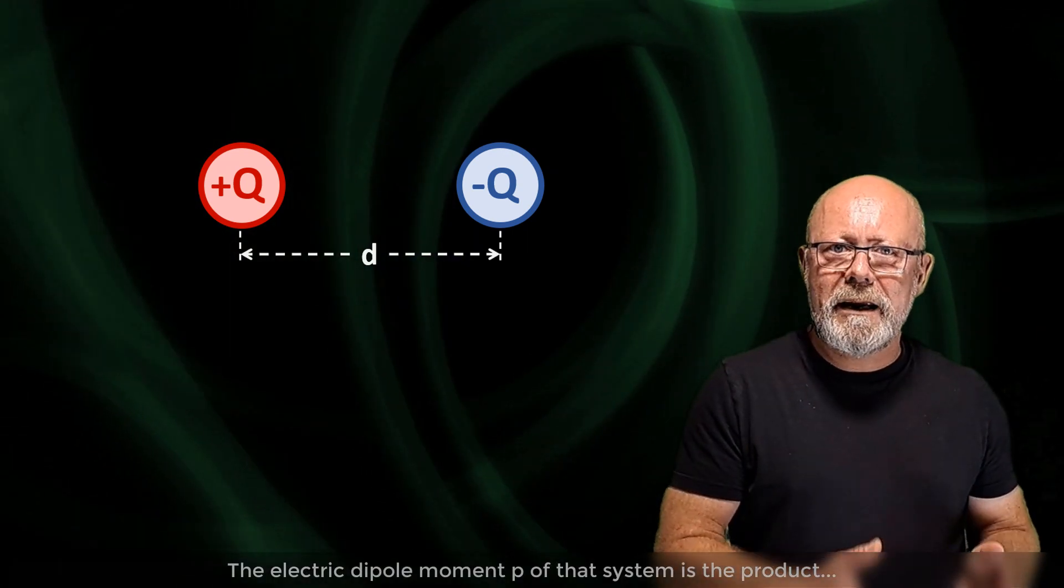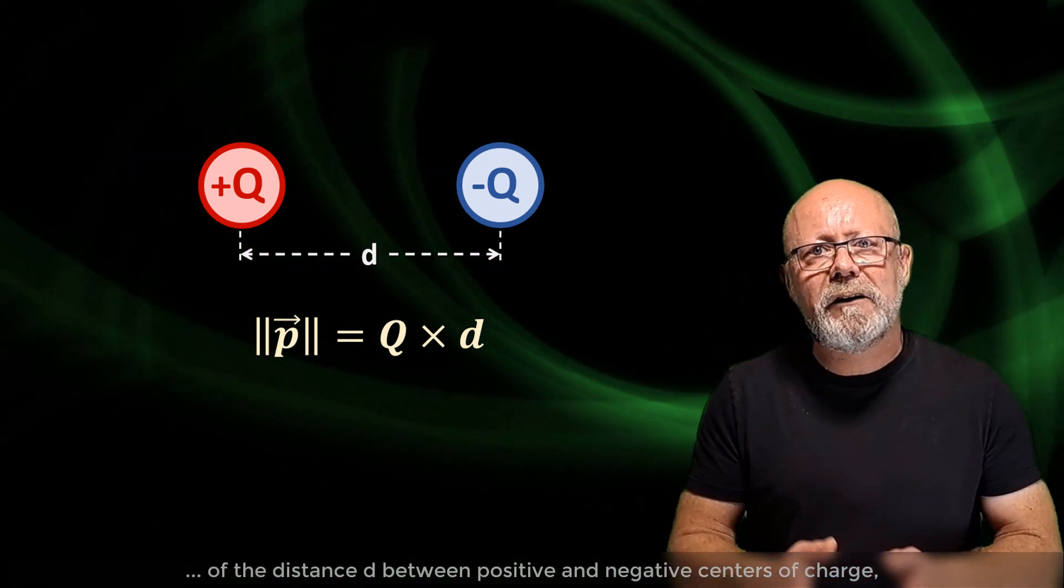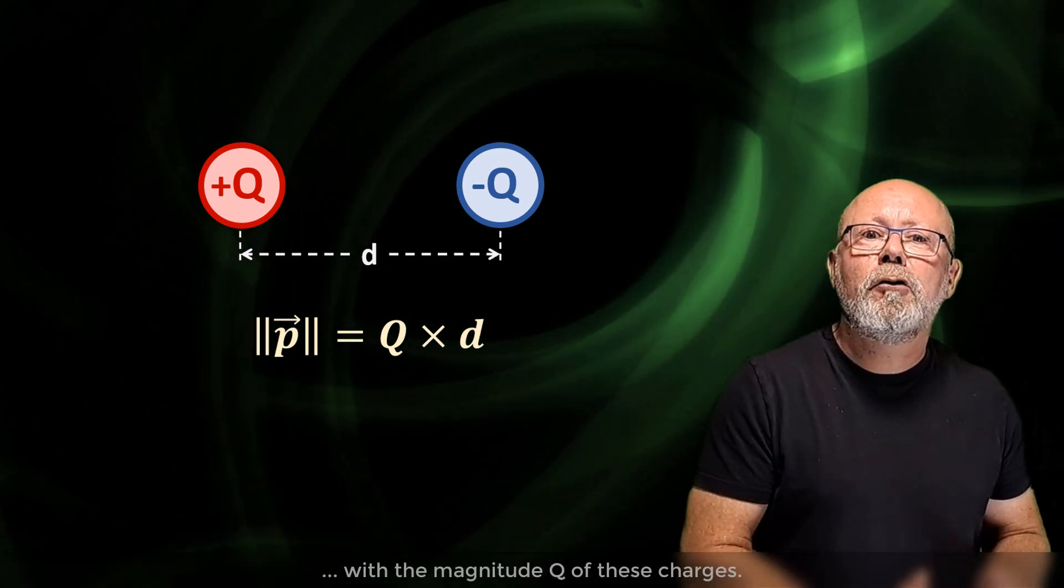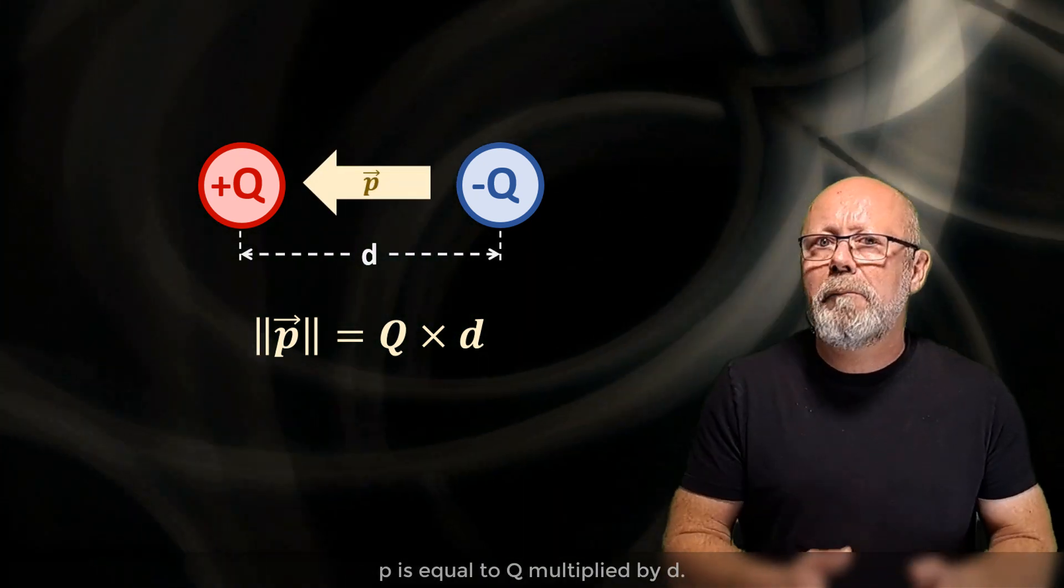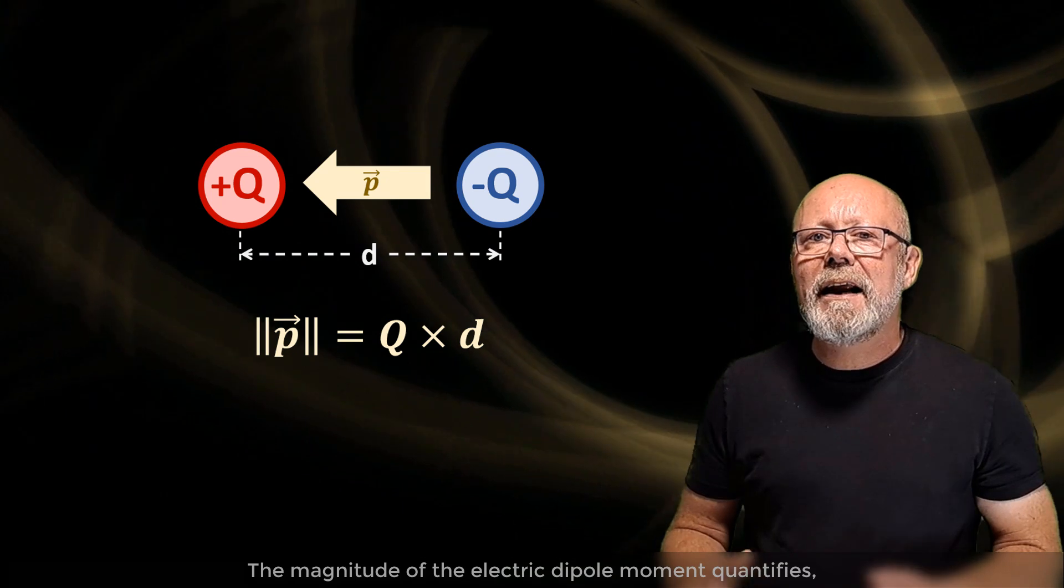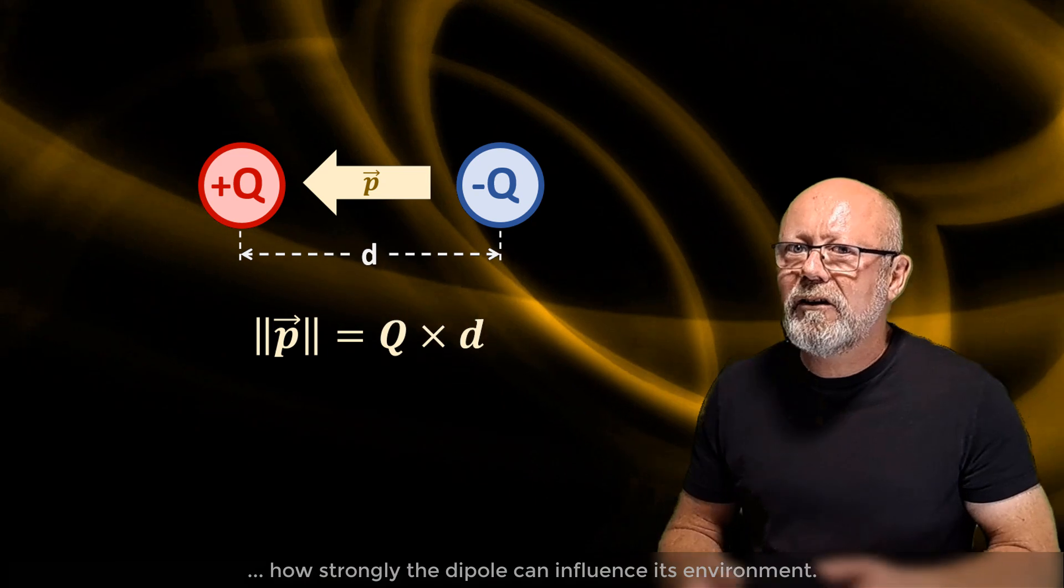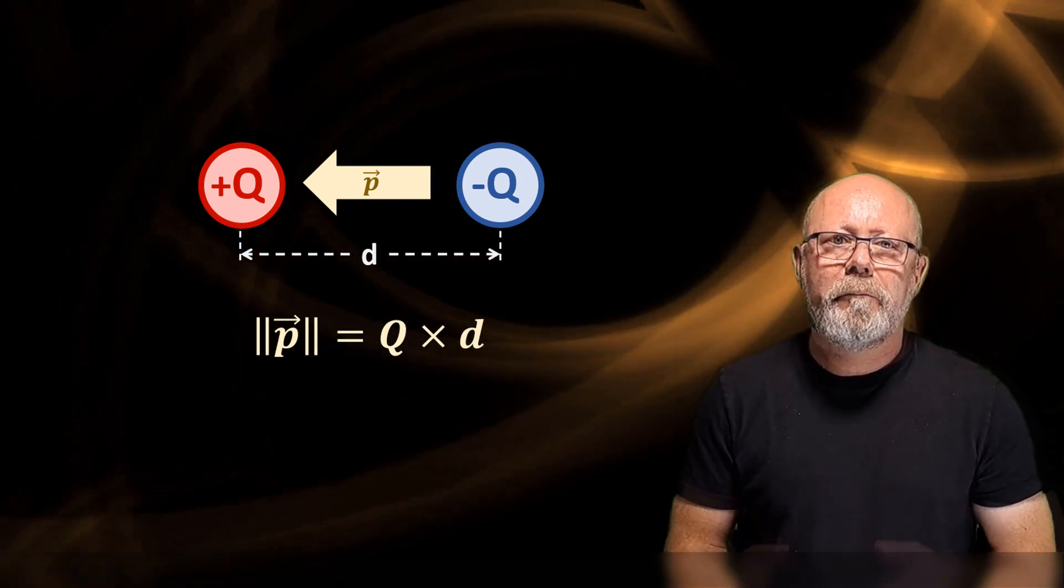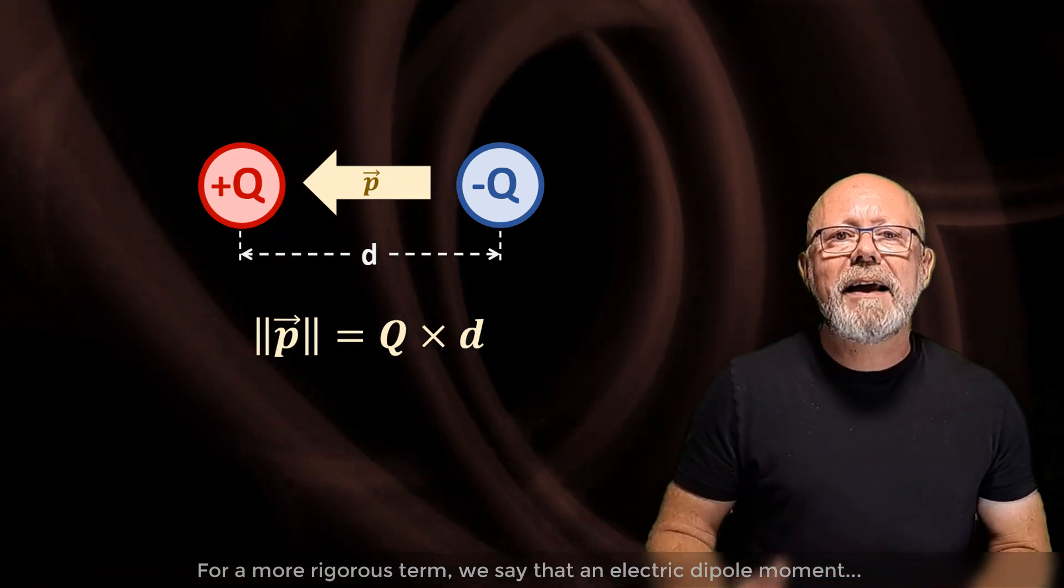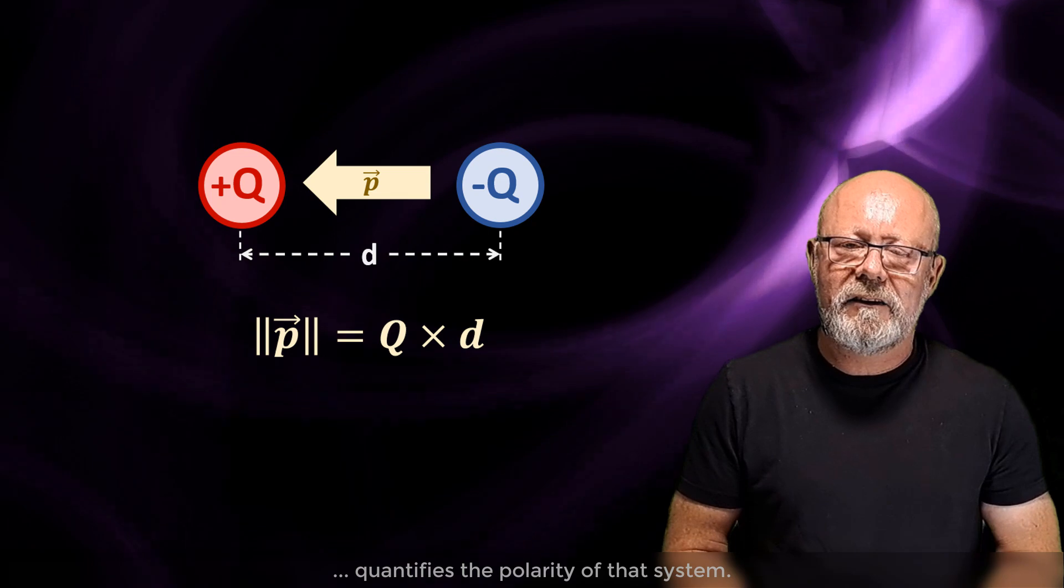The electric dipole moment p of a system is the product of the distance d between positive and negative center of charges with the magnitude q of these charges. p is equal to q multiplied by d. The magnitude of the electric dipole moment quantifies how strongly the dipole will influence its environment. It represents the strength of the electric dipole. For a more rigorous term, we say that an electric dipole moment quantifies the polarity of that system.